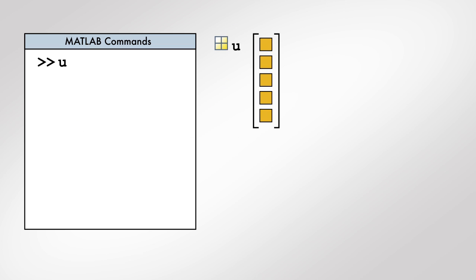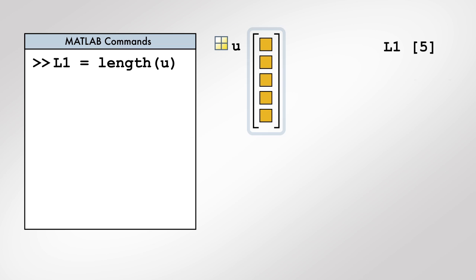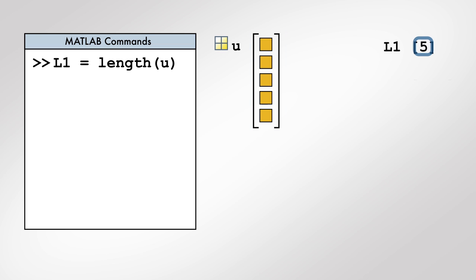We can calculate the number of elements in u with the length function. When we pass a vector as input to the length function, the output is a single number or scalar that is equal to the number of elements in the vector.